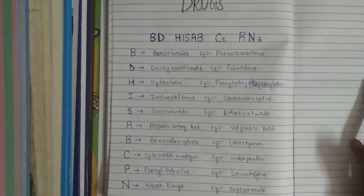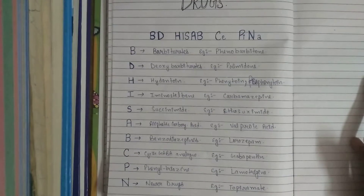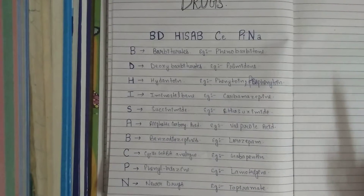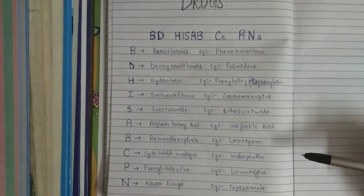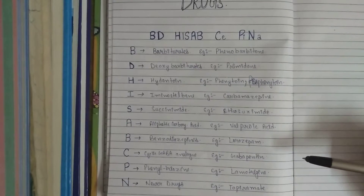B stands for benzodiazepines, for example, lorazepam. C stands for cyclic GABA analogues, for example, gabapentin.